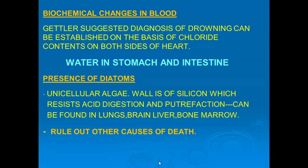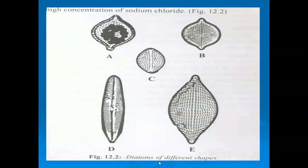However, you have to rule out other causes of death as well. The picture shows various types of diatoms — these are unicellular, microscopic organisms present in water, showing striations. Their wall is of silicon, which resists the process of putrefaction and is not affected by acid.